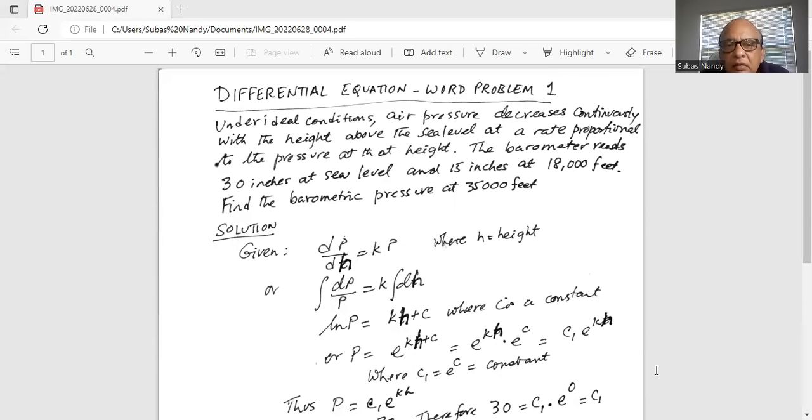Solution. Given dp over dh, derivative of p with respect to h, where p is pressure, and that is equal to k times p, where k is the constant. This information is derived from the fact that the air pressure decreases continuously with height above the sea level at a rate proportional to the pressure at that height.